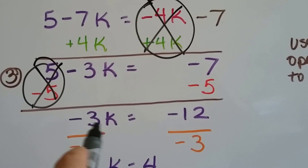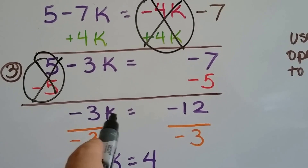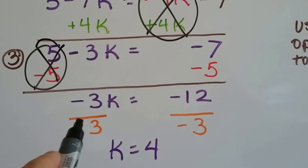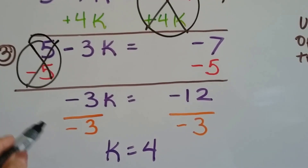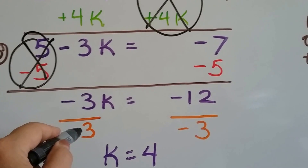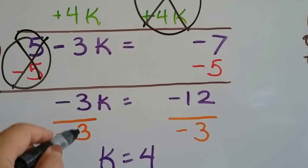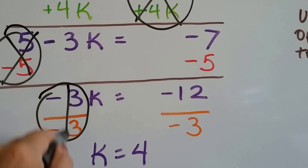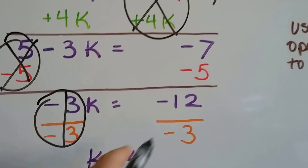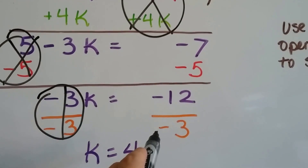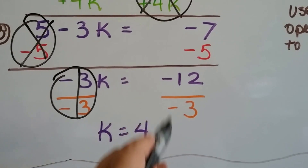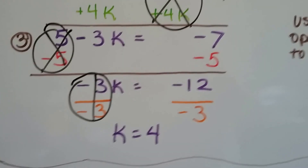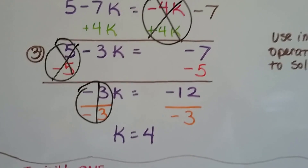Because this is a multiplication problem, we can divide as the inverse to isolate k. Negative 3 divided by negative 3 creates a 1. Negative 12 divided by negative 3 — two negatives give us a positive. K equals 4.